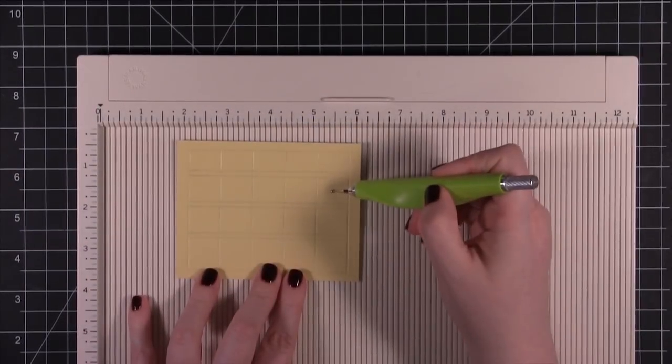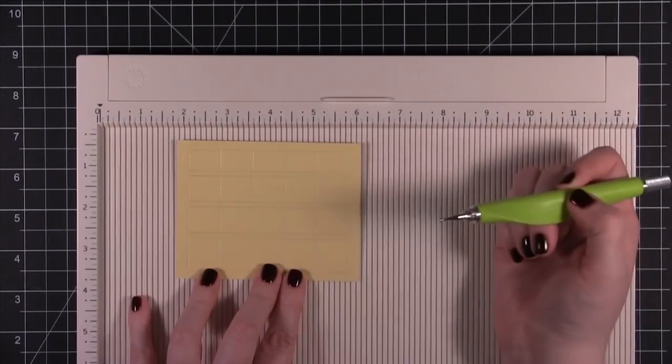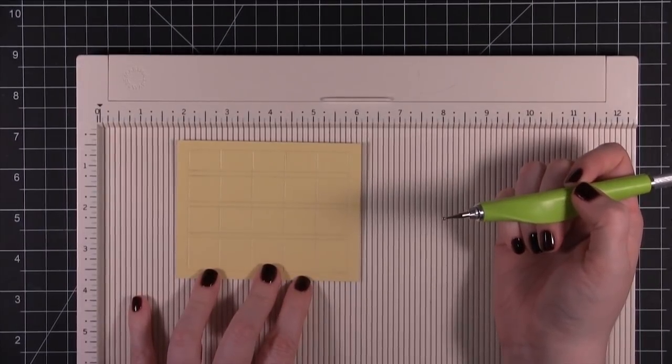You could even do a grid and then maybe stamp a heart in each square or put a flower in each square. Lots of different things you can do with the scoring.